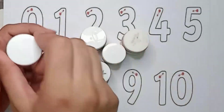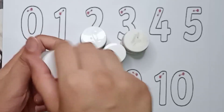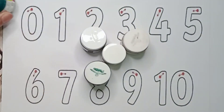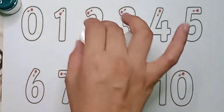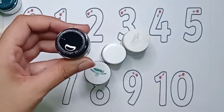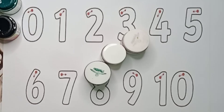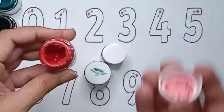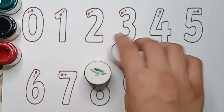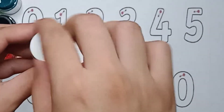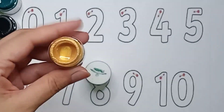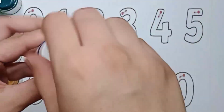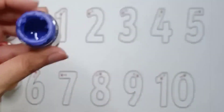Let's see what color it is. Green color, and this one is black color, and this one is red color. Golden color. Violet color.